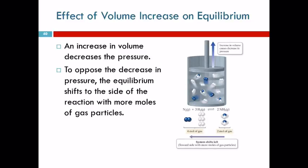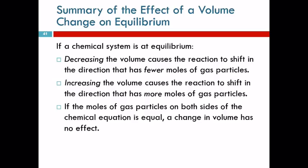If we increase the volume of the container, that decreases the pressure. The system doesn't like it when we decrease the pressure either — it will shift to the side with more gas particles to bring the pressure back up somewhat. Summary: decreasing the volume of a chemical equilibrium involving gases causes it to shift to the side with fewer gas particles; increasing the volume causes it to shift to the side with more gas particles.